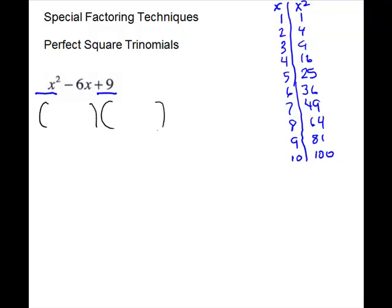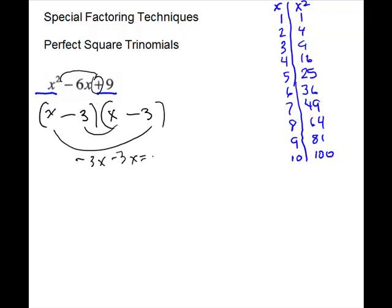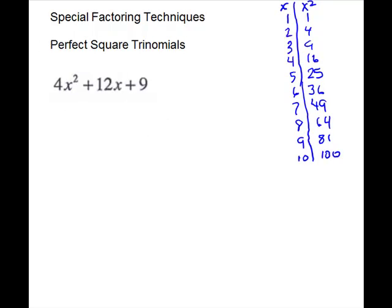We'll go ahead and do our parentheses like normal — like signs, both minus. We'll take the square roots. For 9, it will be 3 and 3. And then you just have to make sure that the middle works. Minus 3x gives us minus 6x, and this works. Quite often, you will see these written with just one parentheses and an exponent of 2. I wouldn't bother to go to that form, but if you do see it this way, you want to recognize it. This next problem is a good example to think of as a perfect square trinomial.